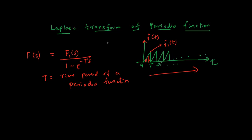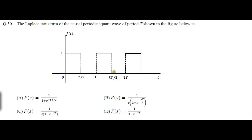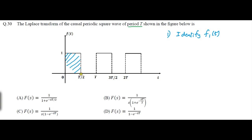The detailed derivation can be found in the link below. We will use this identity to solve our question. The question is: find the Laplace transform of a causal periodic square wave with period T. The first step is to identify the time period, which is T. The next step is to identify F1(t) — that is, the function that exists between 0 and T. From T/2 to T the function does not exist, so we can ignore that part. This gives us our F1(t).